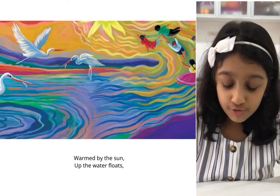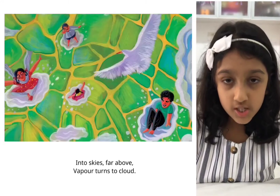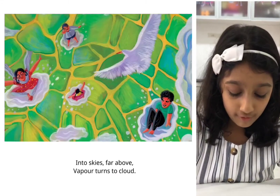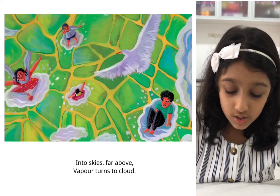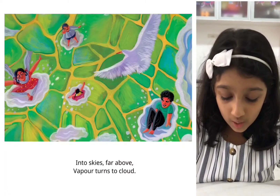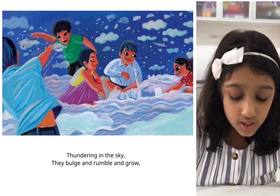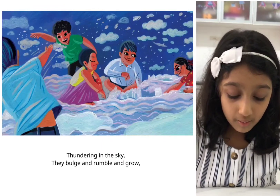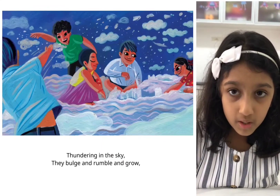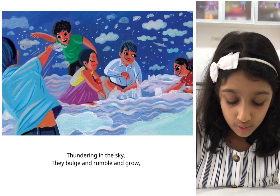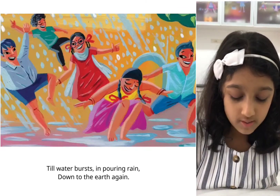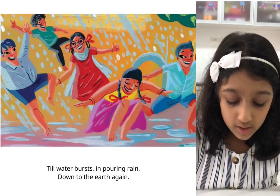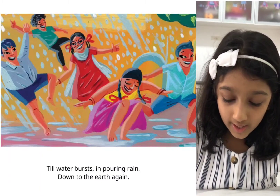Warmed by the sun, up the water floats. Into the skies, far above. Vapor turns to cloud, thundering in the sky. The clouds bulge and rumble and grow, till water bursts into pouring rain. Down to earth again.